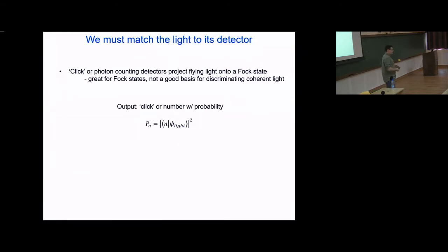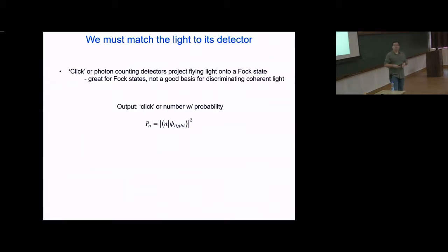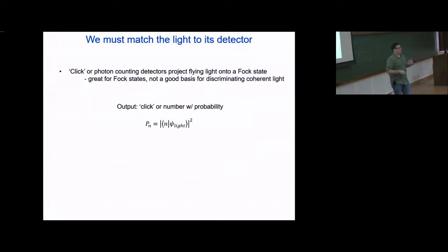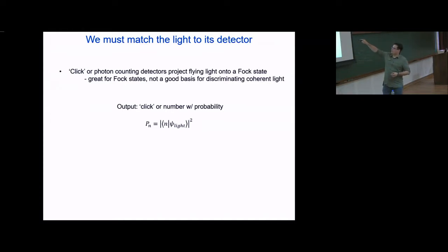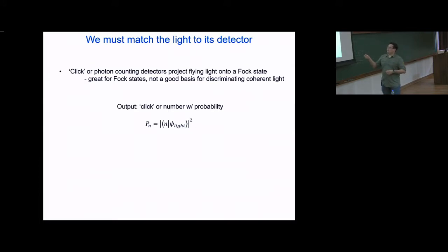The detector we build, at least in its quantum ideal version, performs some specific transformation on the light. One type people have heard of — very popular in the optics community — is a click or photon counting detector. This detector doesn't click if there's no light, and clicks if there's some light; the advanced version clicks and gives you a number saying zero, one, two, or three photons. Mathematically, it projects onto a Fock state |n⟩, where the probability of getting that particular click is given by the overlap integral between |n⟩ and whatever light we feed into it.